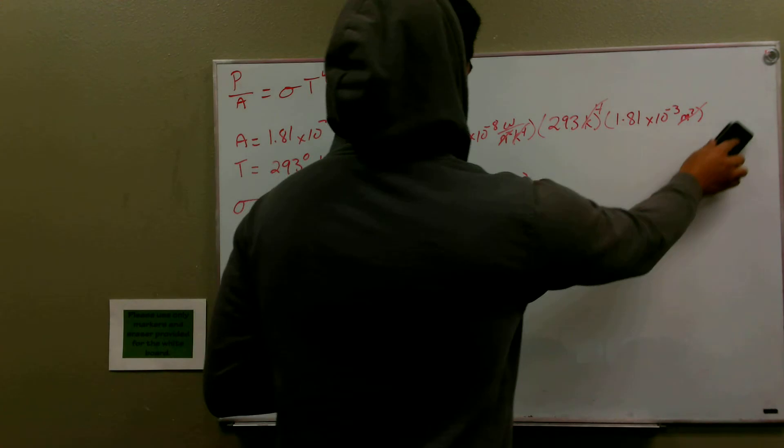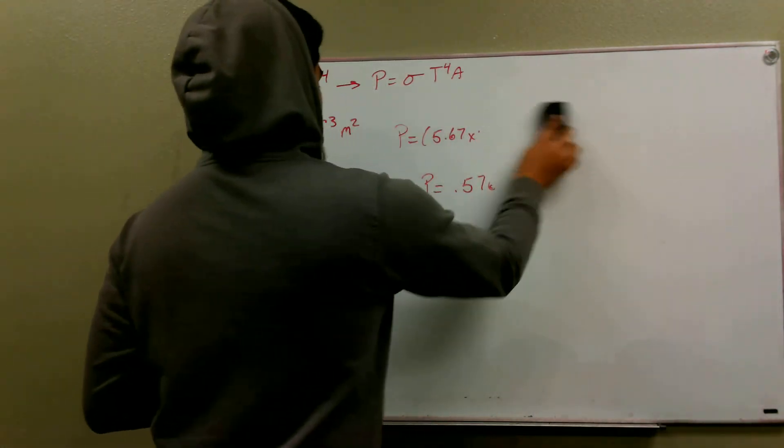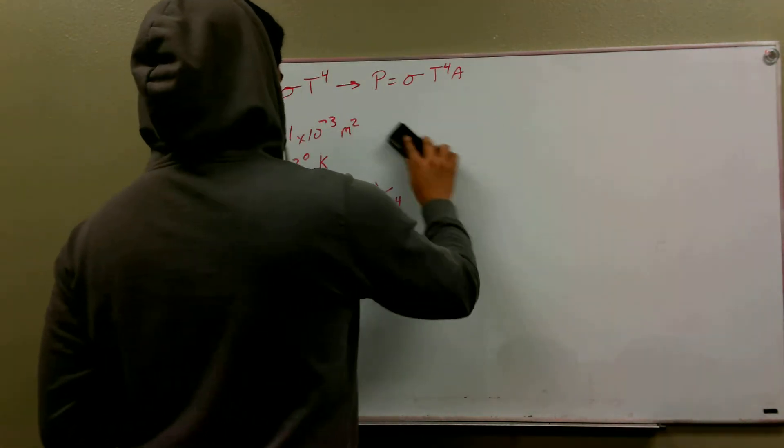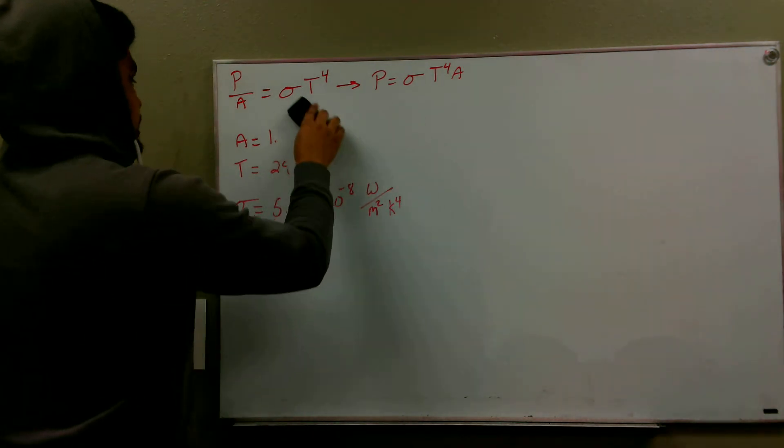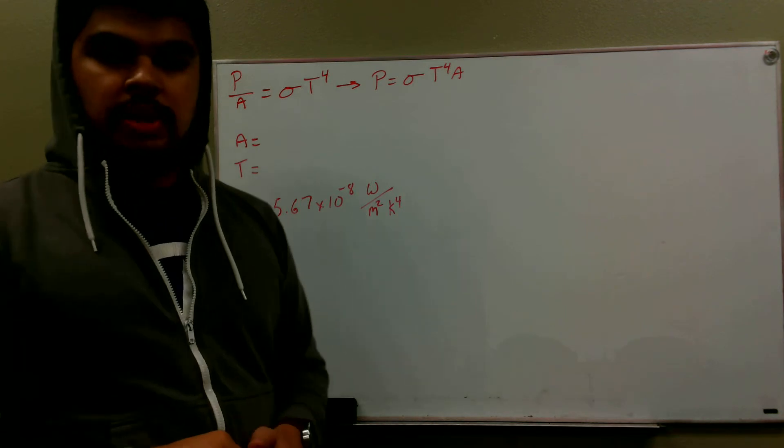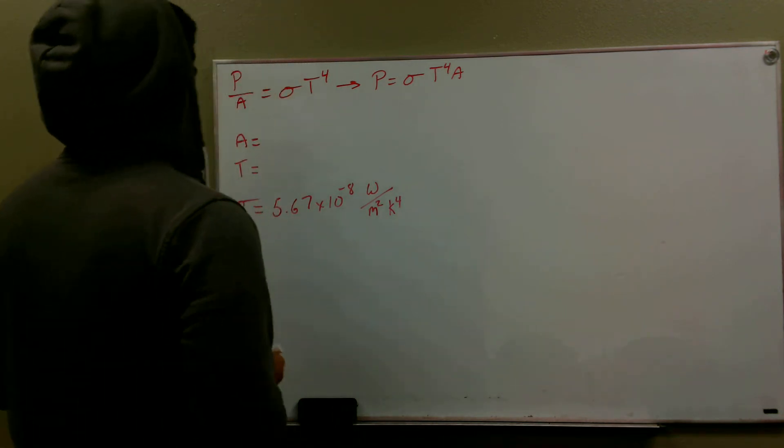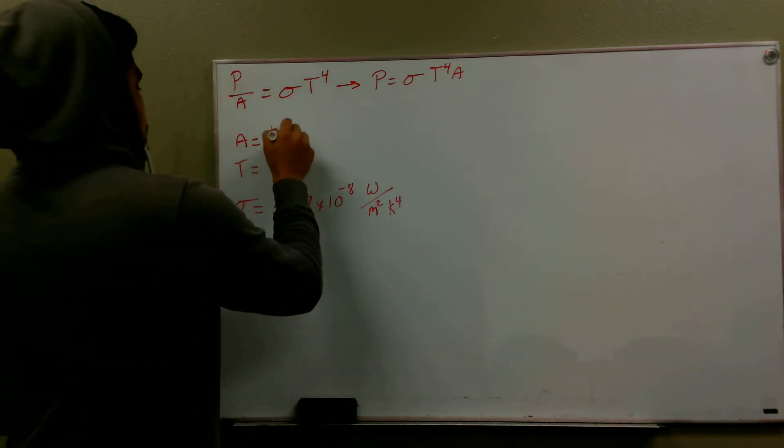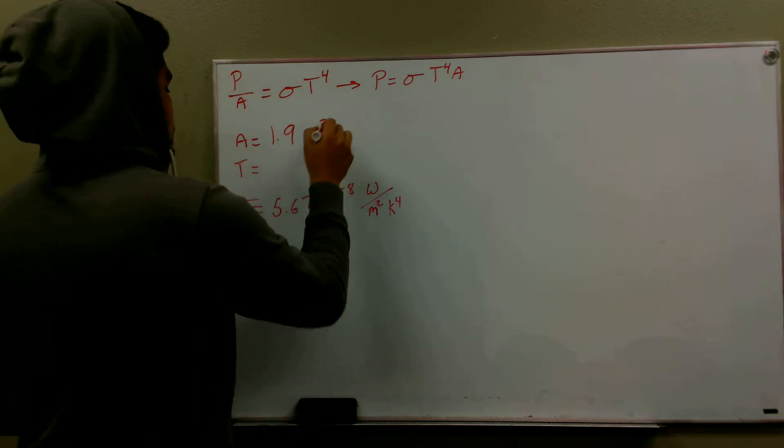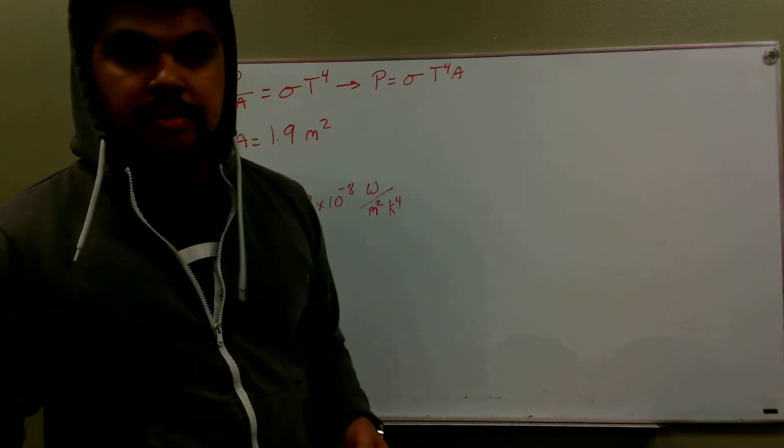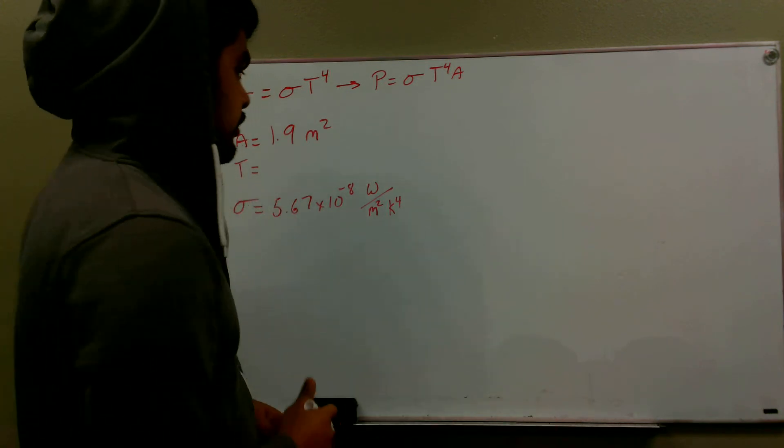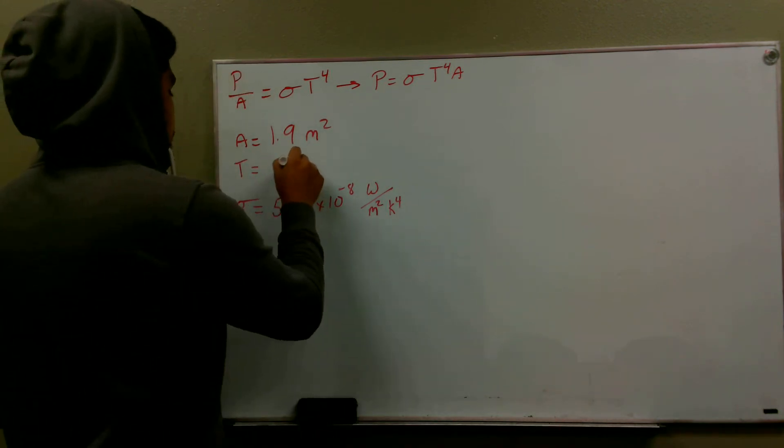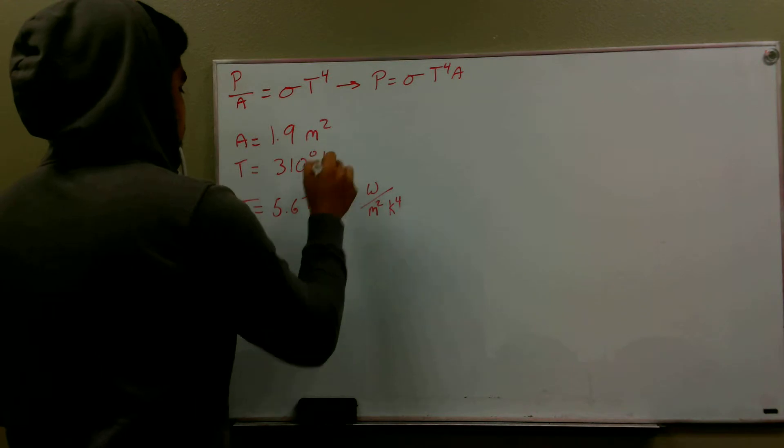Our next part is figuring out the amount of radiation given off by the human body. Our surface area will change, as well as our temperature, because last I checked, we are a little warmer than a basketball. But our surface area here is about 1.9 meters squared, and our temperature is given as 37 degrees Celsius. Again, we have to convert that to Kelvin. And we get 310 degrees Kelvin.